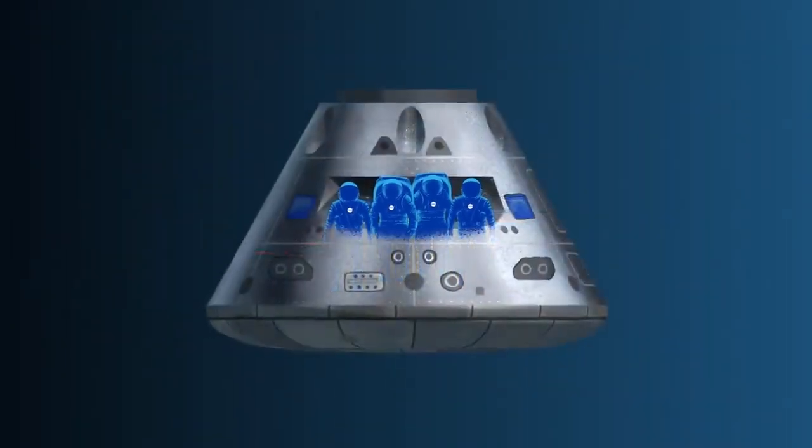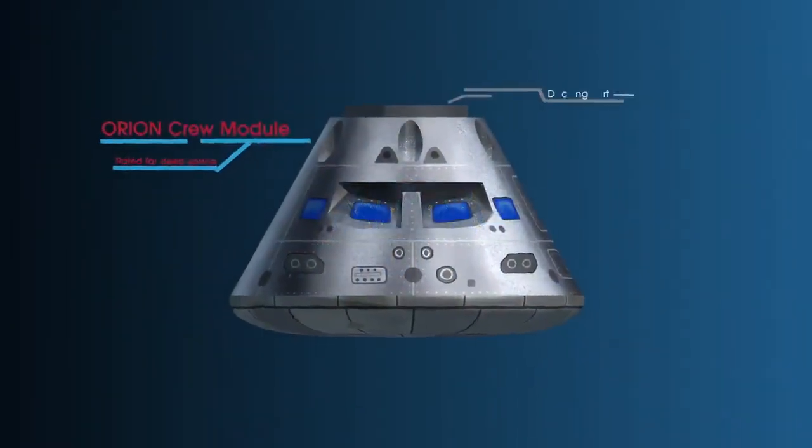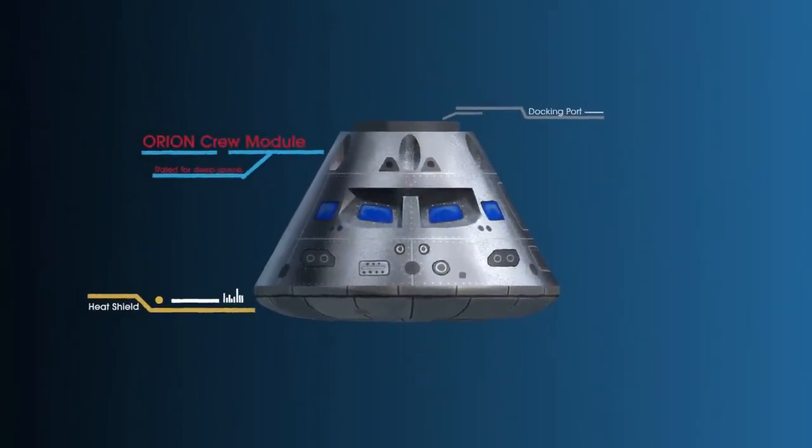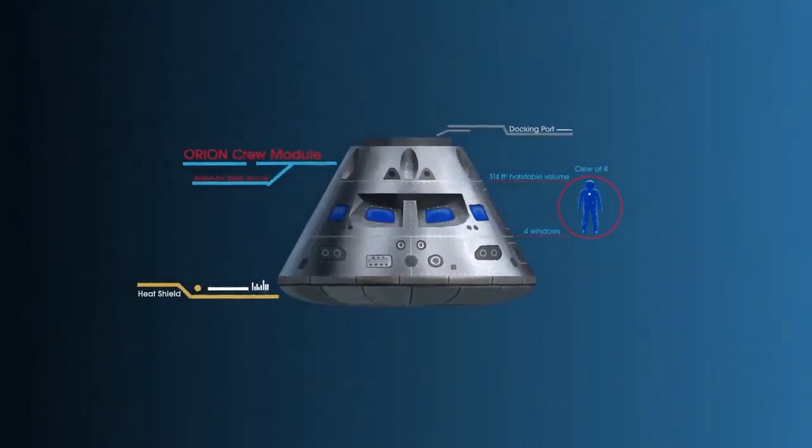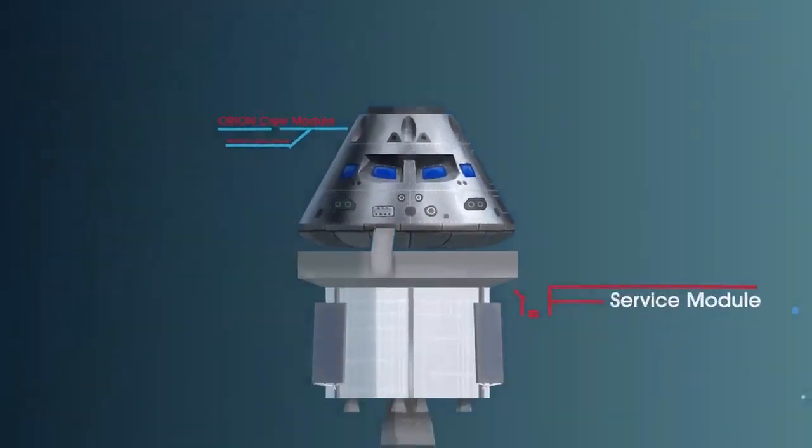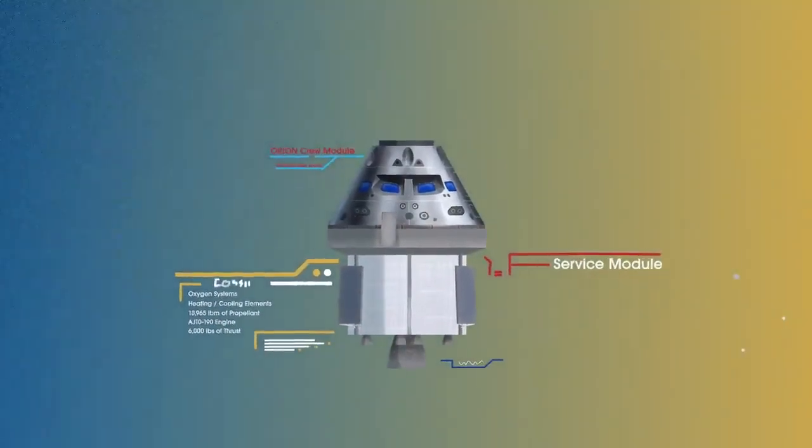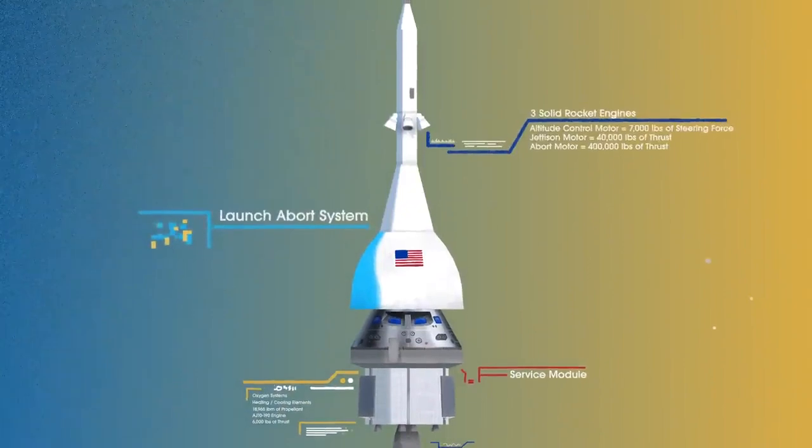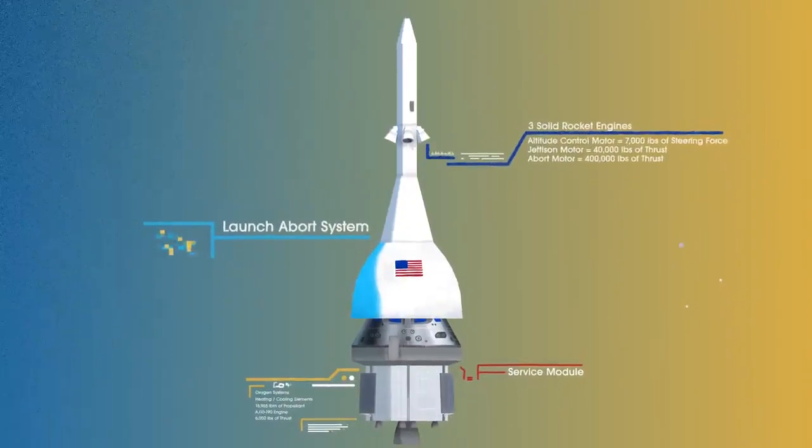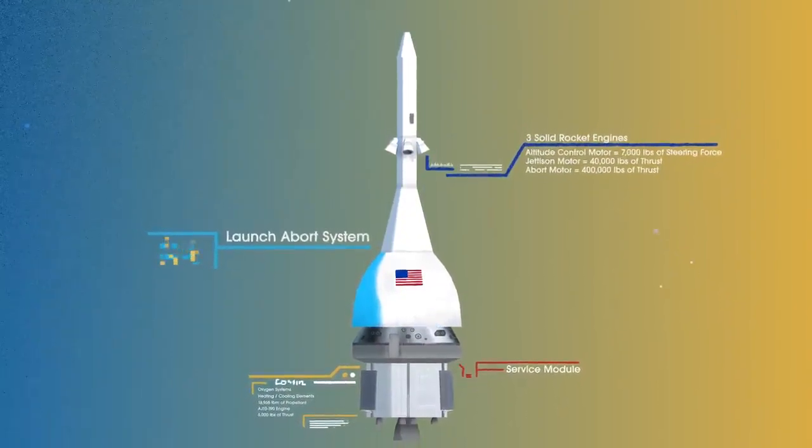This is their deep-space, human-rated spacecraft called Orion, built in three parts: the crew module, where up to four astronauts will live and work throughout the flight; the service module, with life-support systems for the crew and its own engine and fuel reserves; and a launch abort system, with engines capable of pulling the crew module to safety during launch should anything go wrong.